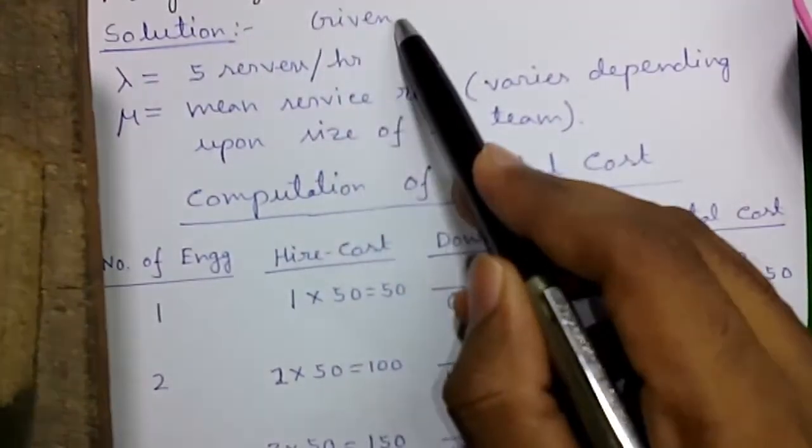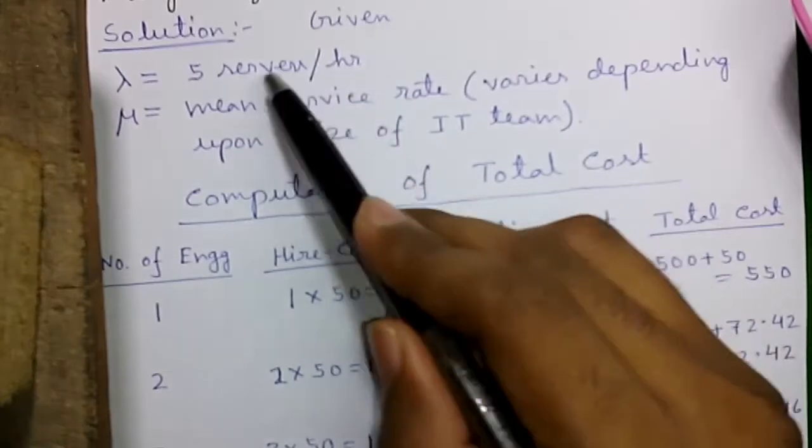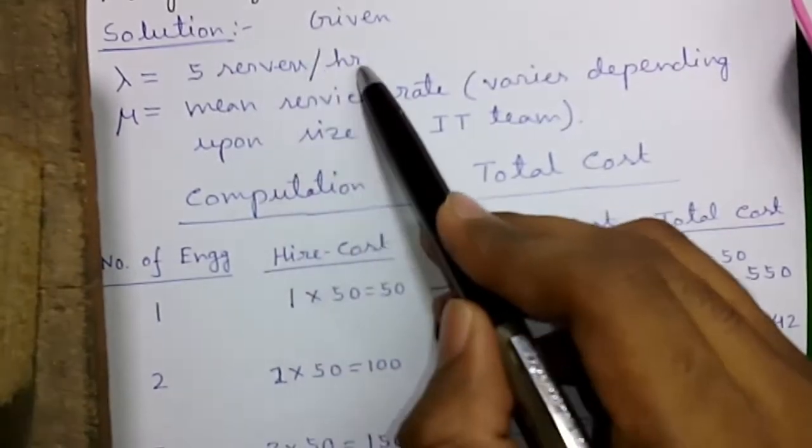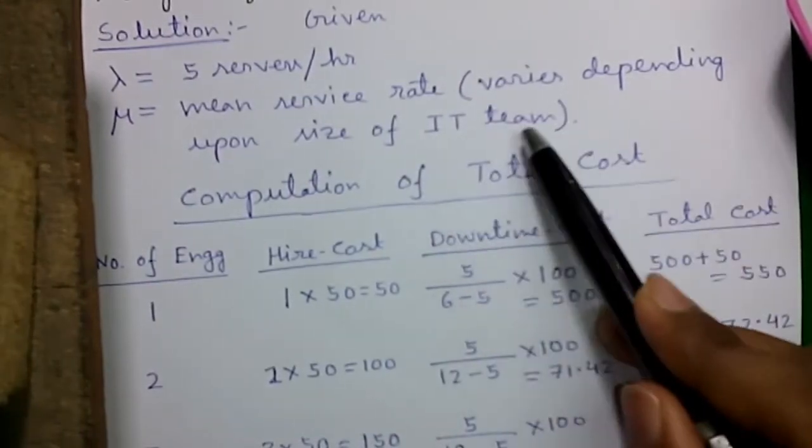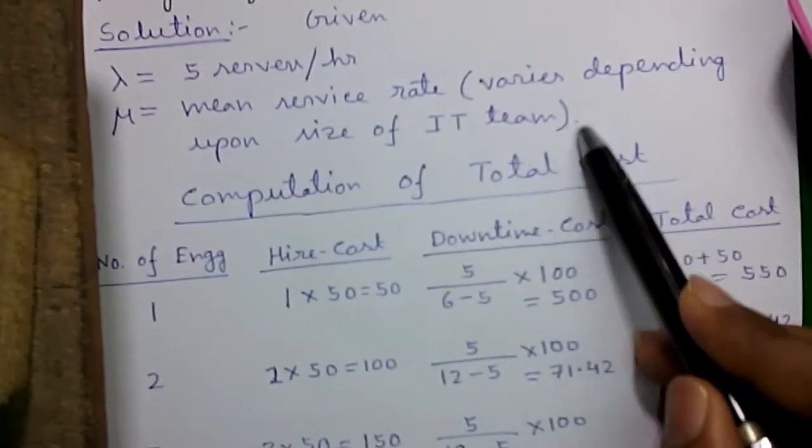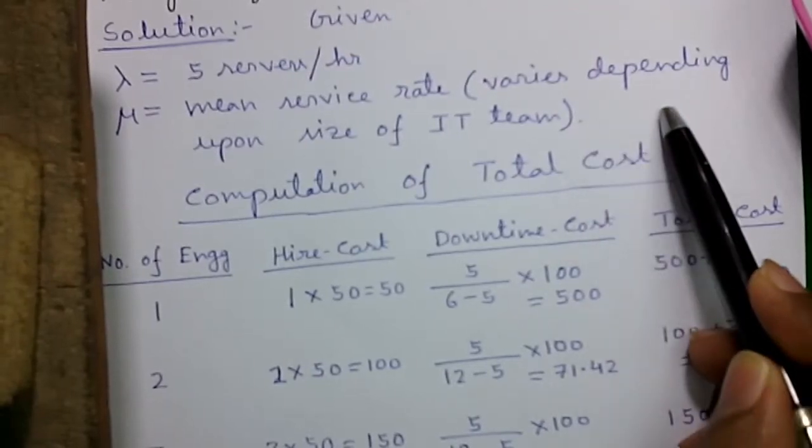Let's proceed to the solution. Given lambda, or average breakdown rate, is 5 servers per hour, and mu is the mean service rate that varies depending upon the size of the IT team. More engineers can repair more machines per hour.